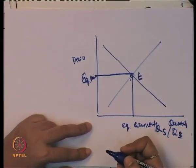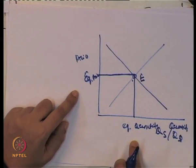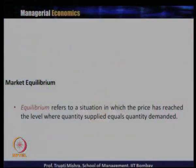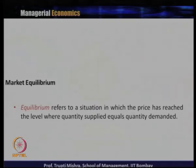Sometimes we use the terms interchangeably: market clearing price and market clearing quantity. Equilibrium is a situation where the price has reached that level where quantity supplied is just equal to quantity demanded. The equilibrium price is the price at which whatever the supplier wishes to supply in the market is exactly equal to whatever consumers demand from the market for that particular product.